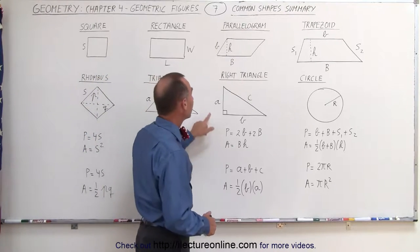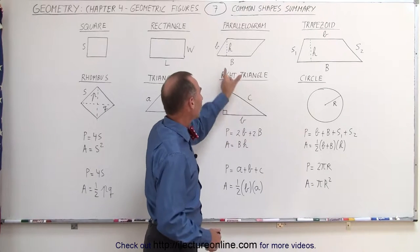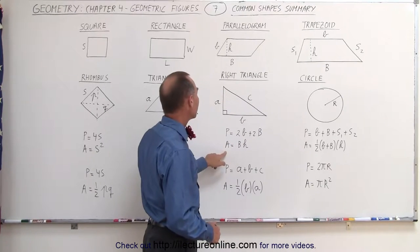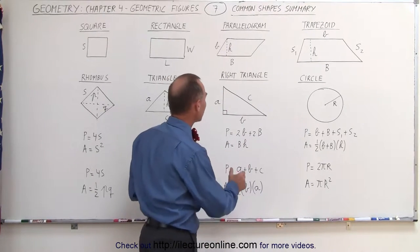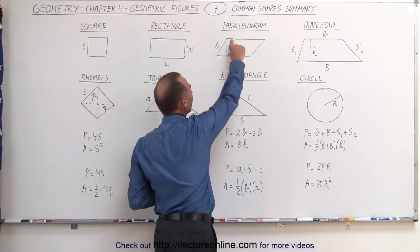For a parallelogram, the perimeter is twice the short side plus twice the long side. For the area, it's the base times the height, which means the length of the long side times the height.